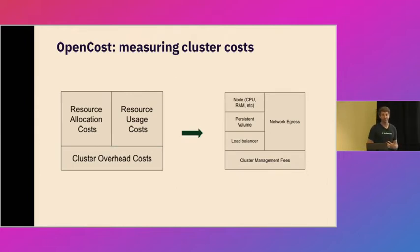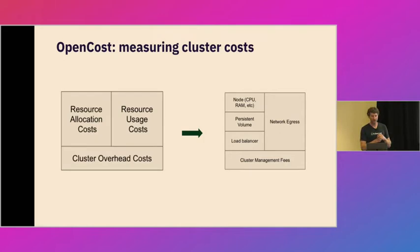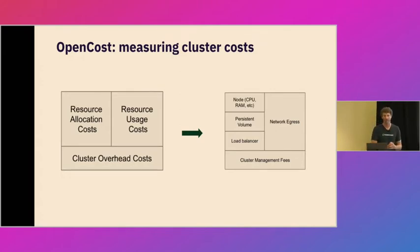Looking at practical examples: allocation-based costs are things like nodes with CPU, RAM, and GPU resources, disk whether attached or persistent volumes, load balancers, et cetera. The most common usage-based costs in a Kubernetes environment would be network egress costs — if you're not egressing across the network, then you're not actually being billed. The most common example of overhead costs would be a cloud provider's cluster management fee. But this could also be like an internal DevOps team time that is allocated to an actual cluster, or when you think about showback or chargeback for that particular cluster.